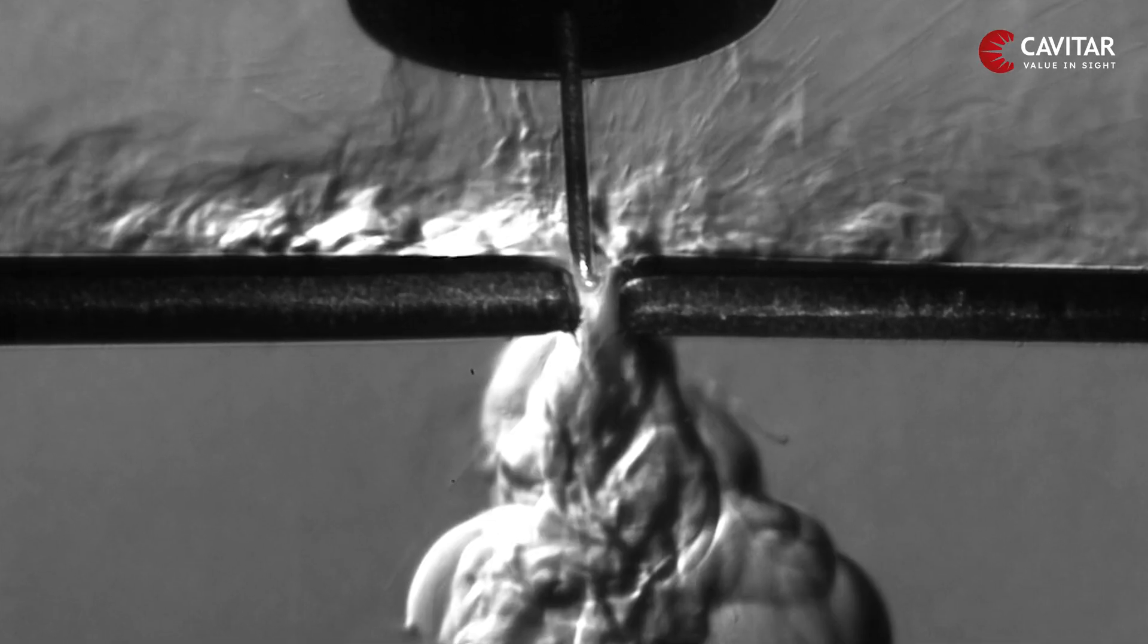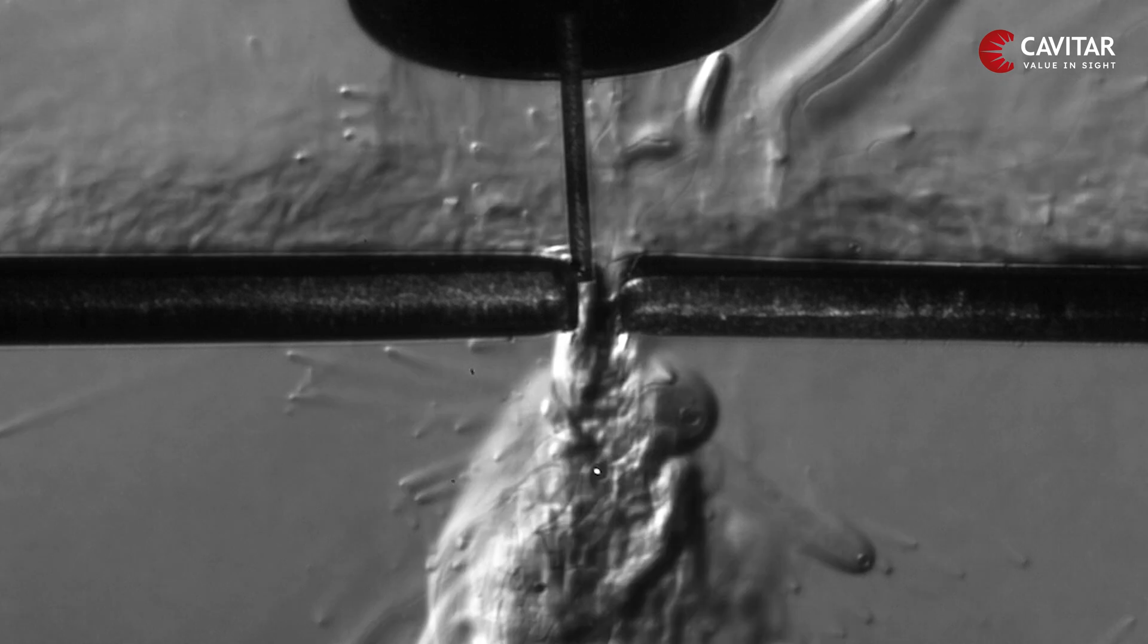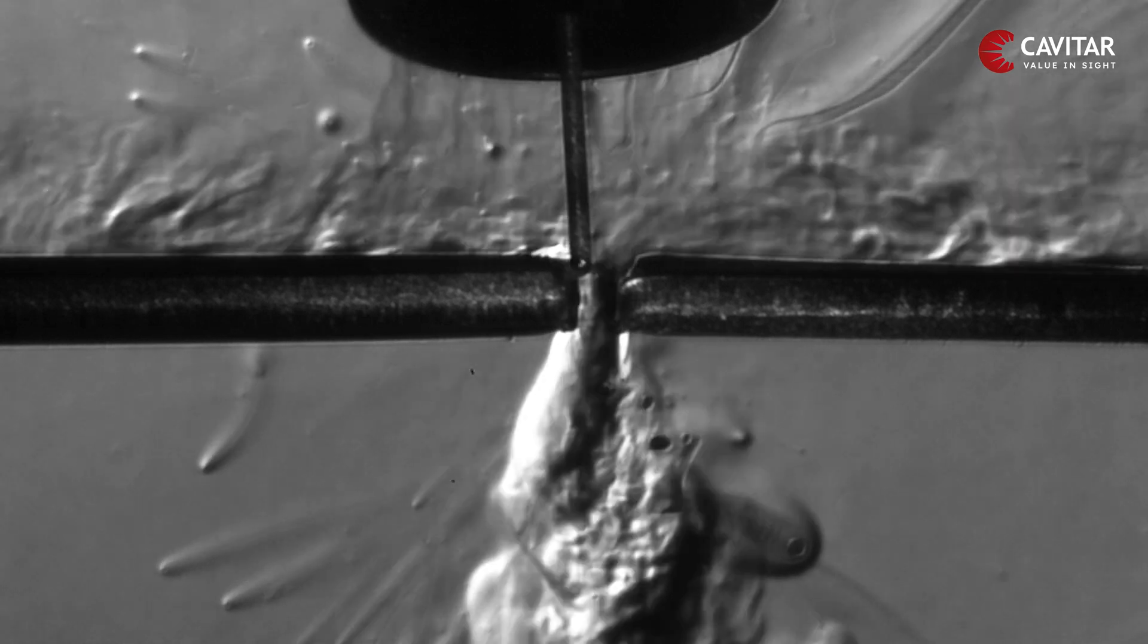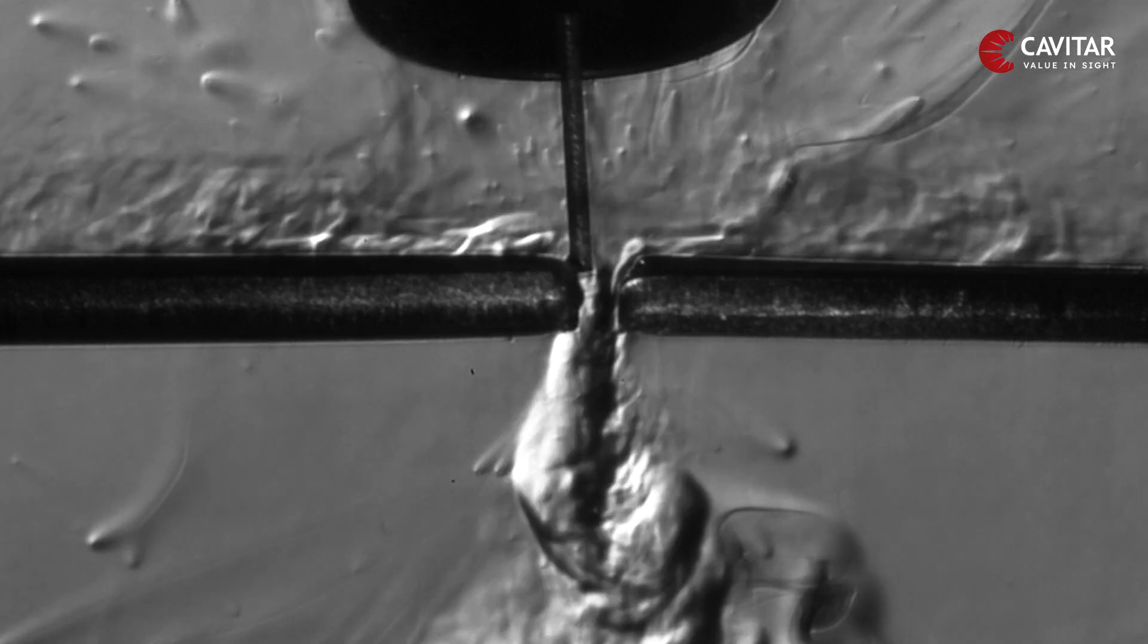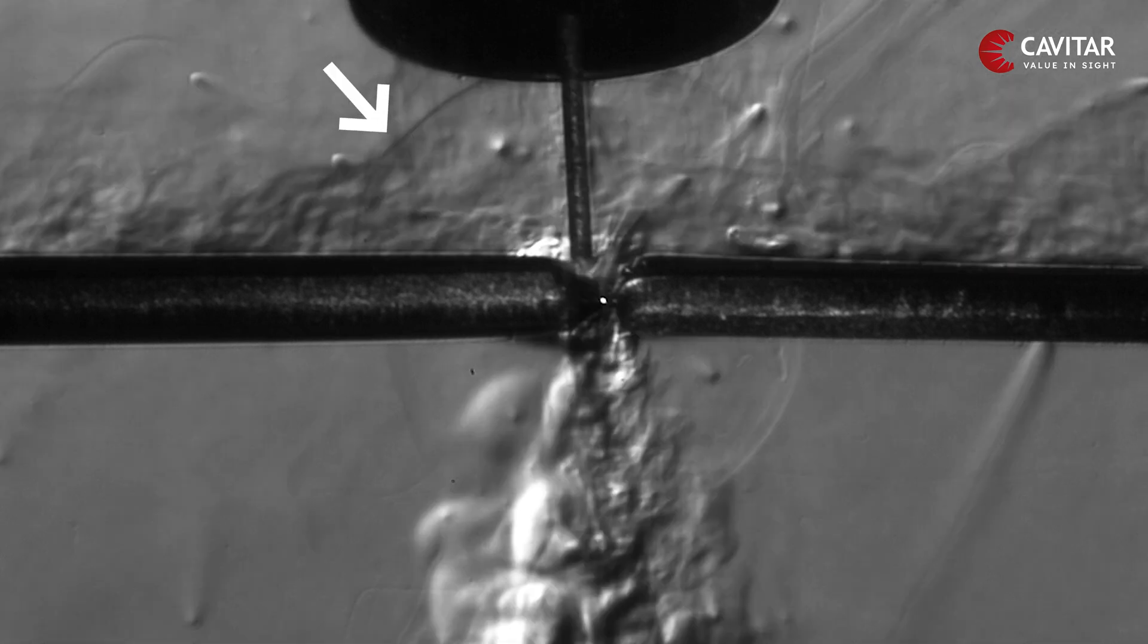The welding wire touches the weld piece and an arc is now formed and we can see spatter flying from the weld with shockwaves forming when the welding wire touches the weld material or the weld itself.